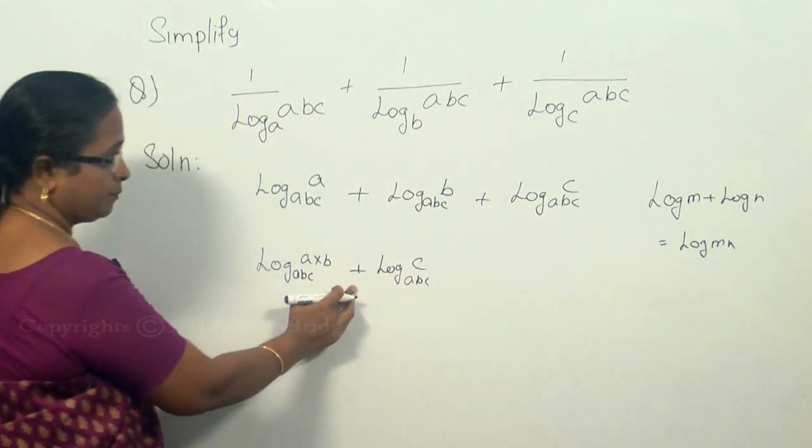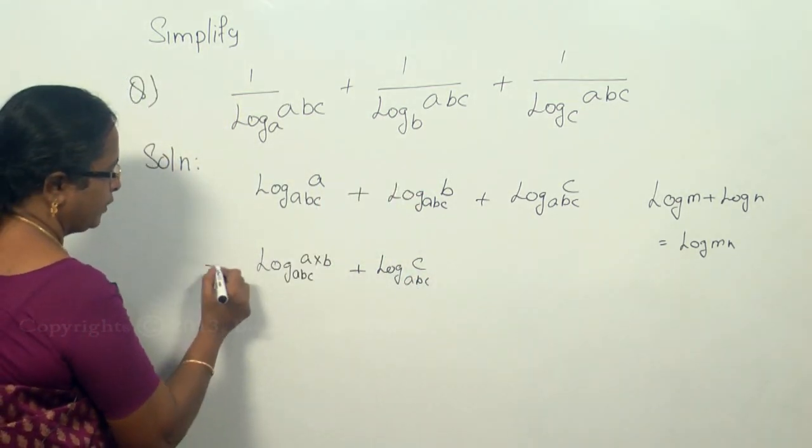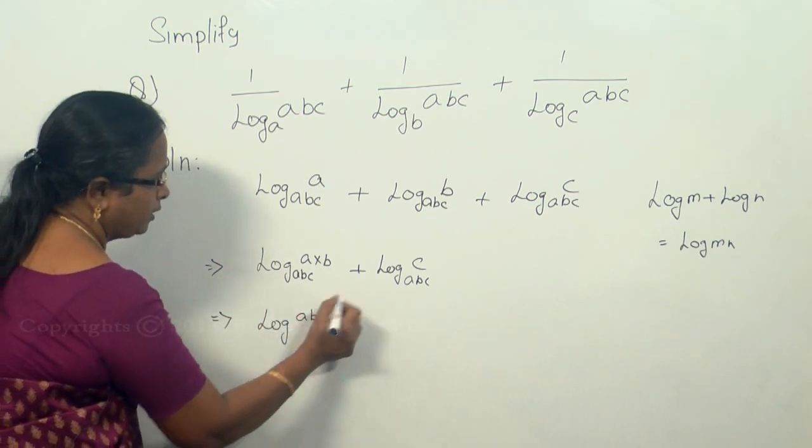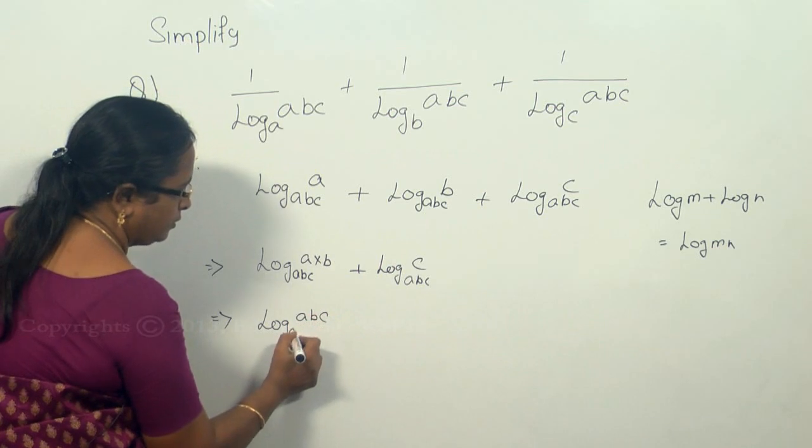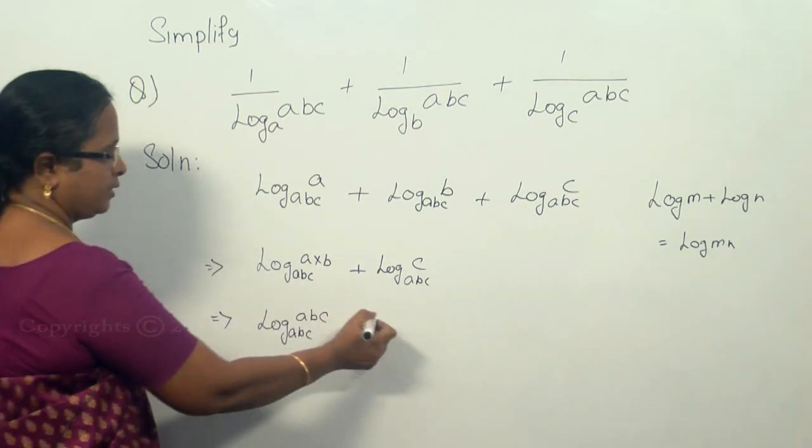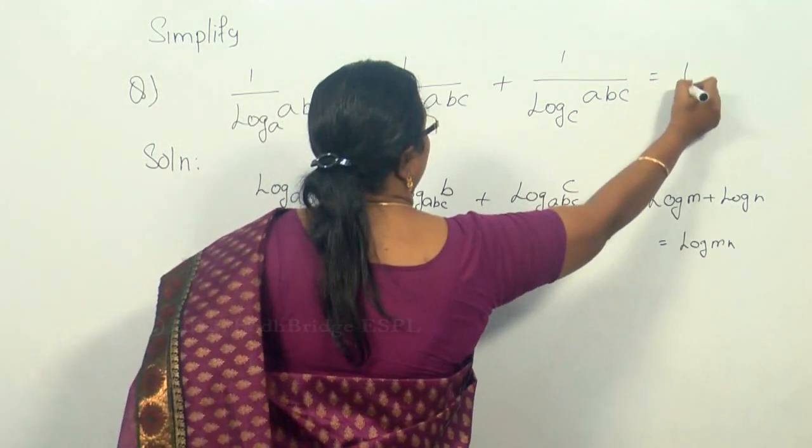Again the base is same and it is a plus sign, so we can make it up the same. Log of abc to the base abc is equal to 1. Therefore, the answer here is 1.